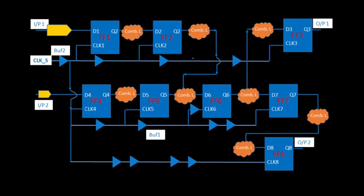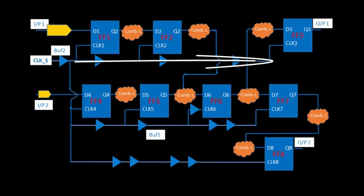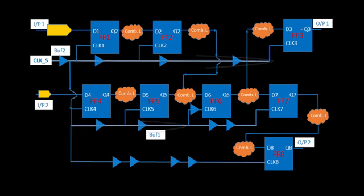Now let's move to a more complex circuit. Between ff2 and ff6 there is one more timing path, and between ff6 and ff3 there is another timing path. So if you make any changes between clock_s and clock2, or clock_s to clock6, it is going to affect our timing path between ff2 and ff6. Similarly, if you make any change in clock_s to clock3 or clock_s to clock6,